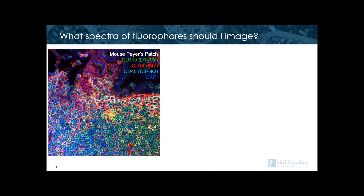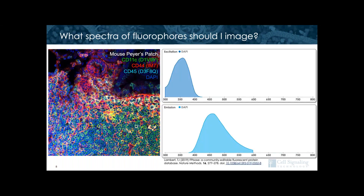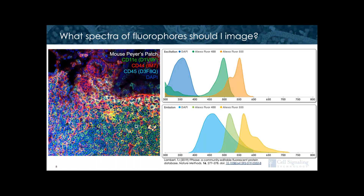So what fluorophores should you use in your experiment? I wanted to give you some standard examples. Here I'm showing our spectra of choice for a four-color image. I've used DAPI — a nuclear dye excited around 350 nanometers with peak emission around 450 — as well as Alexa Fluor 488, Alexa Fluor 555, and Alexa Fluor 647. This is an image from our confocal microscope, and you can see from the curves on the right that this many dyes already has significant spectral overlap, which could make imaging challenging if any of the signals are too strong.